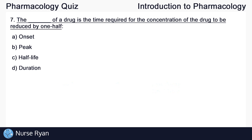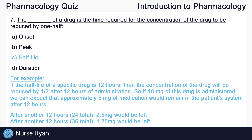Question seven: The blank of a drug is the time required for the concentration of the drug to be reduced by one half. This one should be a little bit easier — the answer is C, half-life. It kind of gives it away in the name. For example, if the half-life of a specific drug is 12 hours, then the concentration of the drug will be reduced by one half after 12 hours of administration. So if 10 milligrams of this drug is administered, approximately 5 milligrams would remain in the patient's system after 12 hours, and then after another 12 hours, that would be down to 2.5 milligrams, and so on.